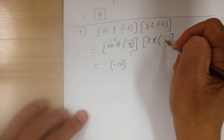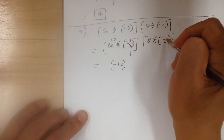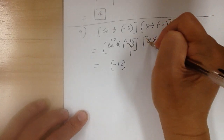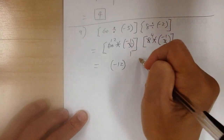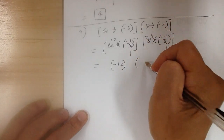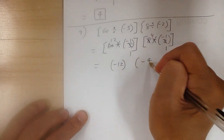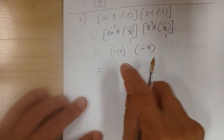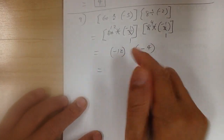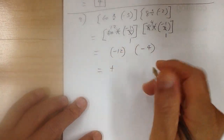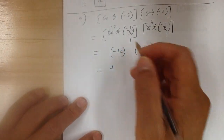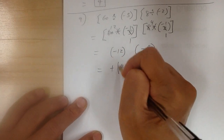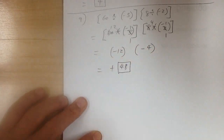For the second bracket: 2 and 8, you can divide by 2 — you get 1; divide by 2, you get 4. So this becomes negative 4. Now you can multiply these together. Negative times negative gives you positive. 12 times 4 gives you 48, so your final answer would be 48.